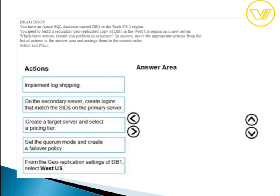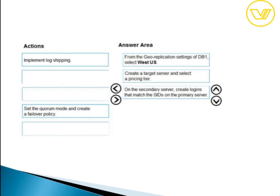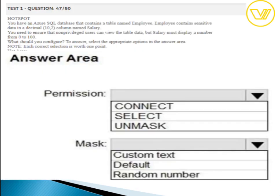For the geo replication question on DB1: from geo replication settings on DB1, select West US and create a target server, select the pricing tier on the secondary server, then create a login matching the SID on the primary server. Geo replication and multi-region availability were covered in earlier questions.